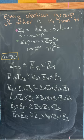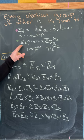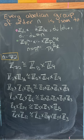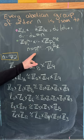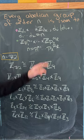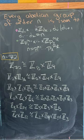Alternatively, you could take the other form, which is Zp1 to the M1 cross all the way up to Zpl to the Ml, where n is equal to P1 to the M1 up to Pl to the Ml, where those Ps are not necessarily distinct primes.